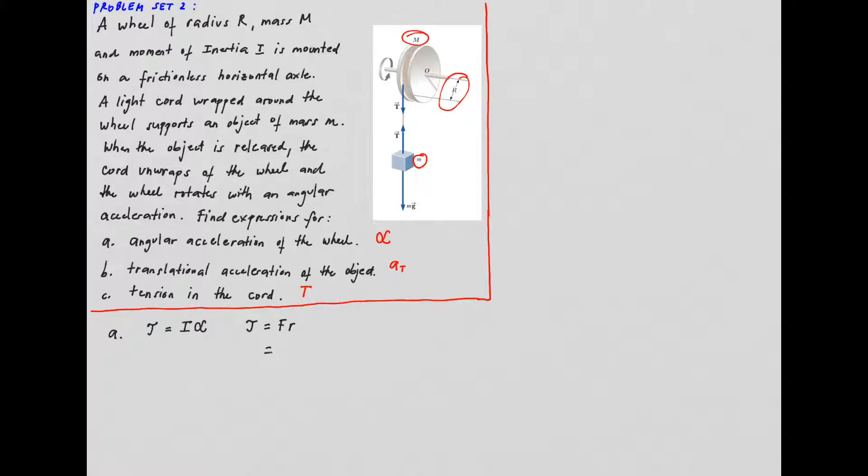Considering the force here, the force here is the tension of the rope multiplied by the radius which is R. Therefore, torque equals tension multiplied by the radius.